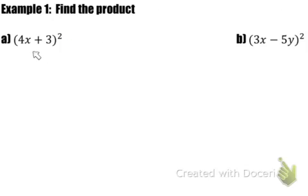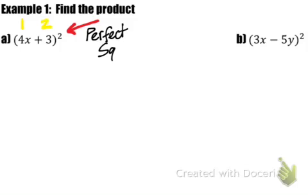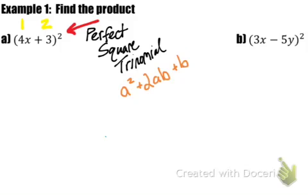In the first example, we have a binomial that's being squared, read as '4x plus 3, quantity squared.' It has two terms so it's called a binomial, and we call this a perfect square trinomial. When you multiply out each term, or distribute, the product takes the form a squared plus 2ab plus b squared. I'll show you how to multiply it out using our graphic organizer — the box method, or Punnett square — and then how this form works for every perfect square trinomial.